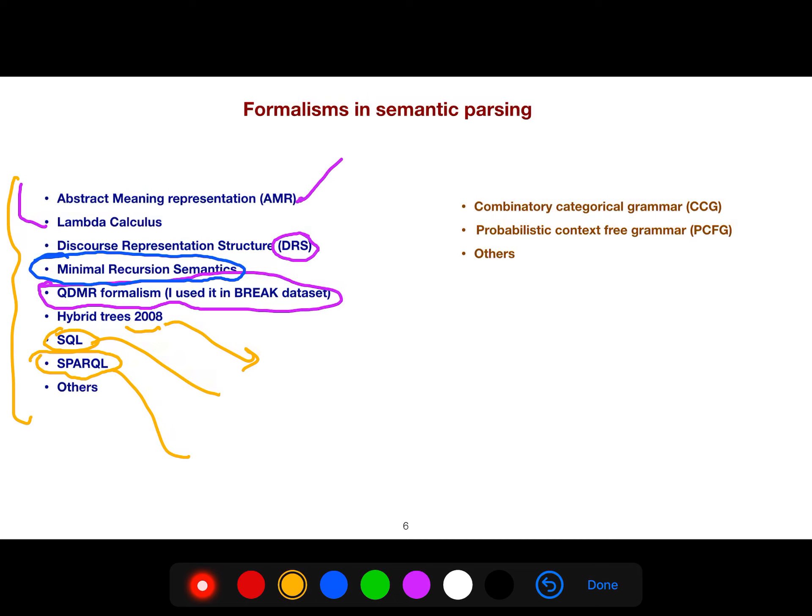Another perspective to look at this problem is to see it either as a combinatoric categorical grammar, like people in Edinburgh in Scotland, or you can think about it as probabilistic context-free grammar. And there are many other versions. I have a playlist for this. There are very interesting things.